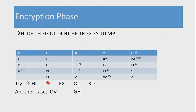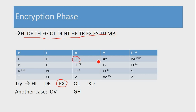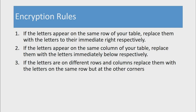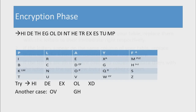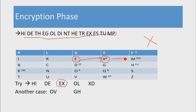Now let's encrypt EX. E is here and X is here — both are on the second row. So we use the first rule, which states that if the letters appear on the same row, you replace them with the letters to their immediate right. E will be encrypted to X, which is directly to the right, and X will be encrypted to M. These three examples — HI, DE, and EX — have illustrated all three rules.